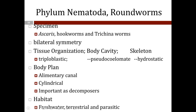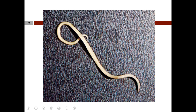Phylum Nematoda: examples are the pinworms, hookworms, and Ascaris, which we will dissect. They exhibit bilateral symmetry and are triploblastic pseudocoelomates with a hydrostatic skeleton. They exhibit a complete digestive tract with a mouth and anus. They are cylindrical or cigar-shaped and are important as decomposers. These parasites are found in terrestrial as well as freshwater aquatic environments. An example of an Ascaris nematode is shown.